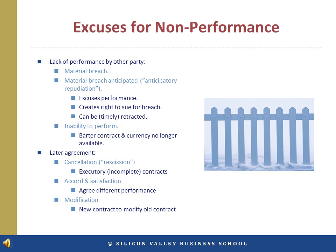There are several situations where performance of a contractual obligation can be excused, generally falling into two categories: performance excused by lack of performance by the other party, or excused by later agreement between the parties. If a homeowner contracts a builder to build a six-foot fence to prevent deer eating her plants, and the builder constructs a two-foot fence, this would be considered a material or major breach by the builder and would excuse the homeowner of her duty to pay. The homeowner doesn't have to wait for the builder to breach if breach can be anticipated. If the builder tells the homeowner he cannot get hold of the materials, the builder has repudiated his obligation, and the homeowner's duty to pay is excused.